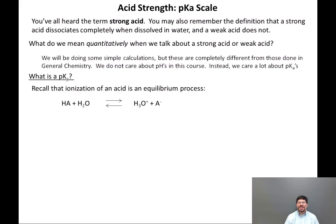Recall that ionization of an acid is an equilibrium process. If we have an acid HA and dissolve it in water, HA reacts with H2O and is in equilibrium with H3O+ and A-. The equilibrium constant for this reaction is Ka = [H3O+][A-] / [HA][H2O].